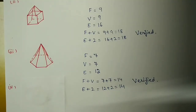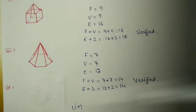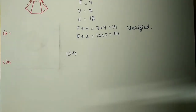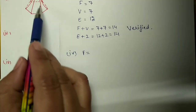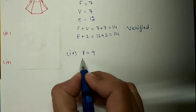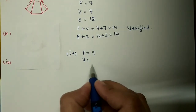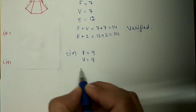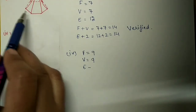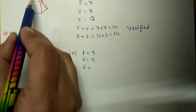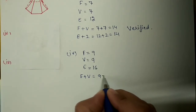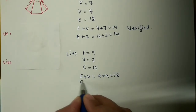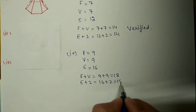Fourth figure is an octagonal pyramid. You can check the figure from your book. Faces: eight triangular faces plus one base - total nine faces. Vertices: eight at bottom plus one top - nine vertices. Edges: eight at base plus eight slant edges - sixteen edges. Substituting: 9 plus 9 equals 18, and 16 plus 2 equals 18. So this one is also verified.